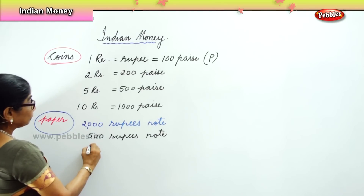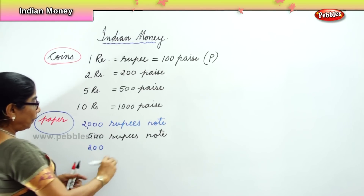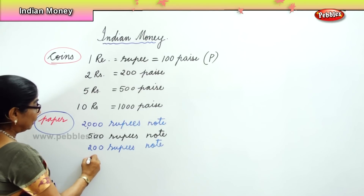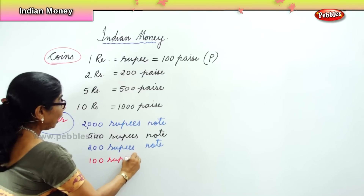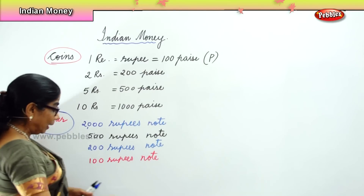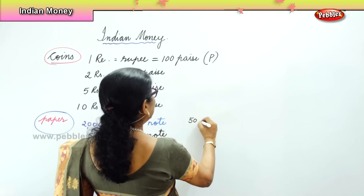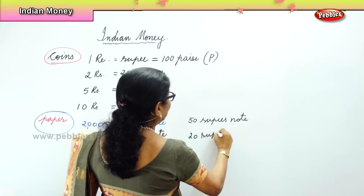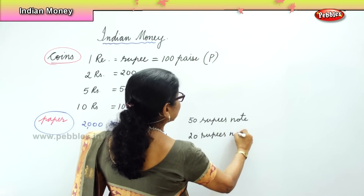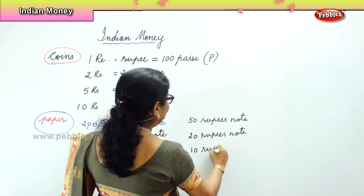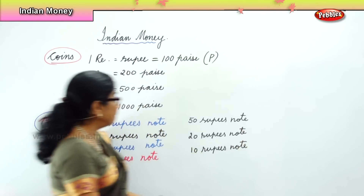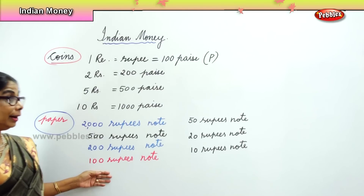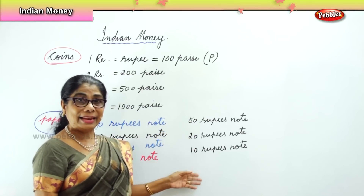Next we have 200 rupees note. And then there is 100 rupees note. Then we have 50 rupees note. Then we have 20 and 10 rupee paper notes.